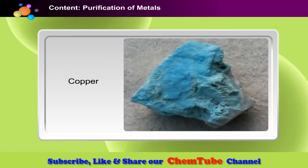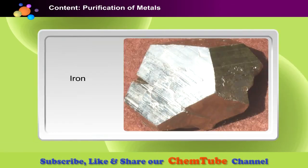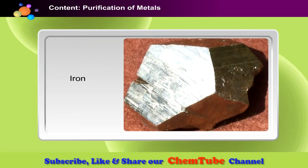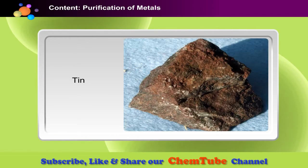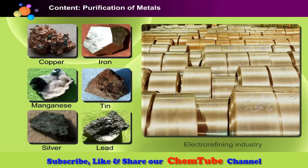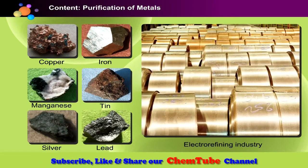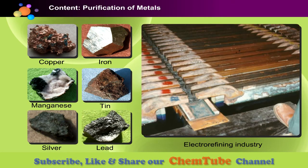Most metals occur in nature as minerals. Mineral deposits from which metals can be produced are called ores. Ores are mixtures of metal-containing material and useless impurities. There are various methods of purification of metals, and electrolytic refining is one of them.